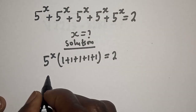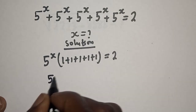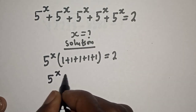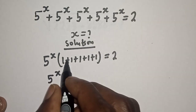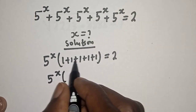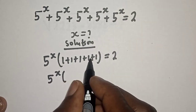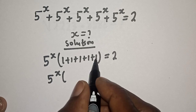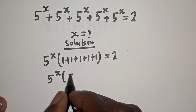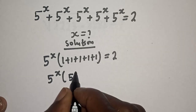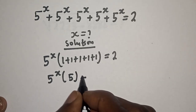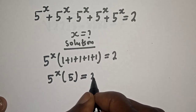Then we have 5 raised to power s, bracket, 1 plus 1 plus 1 plus 1 plus 1, which gives us 5, is equal to 2.